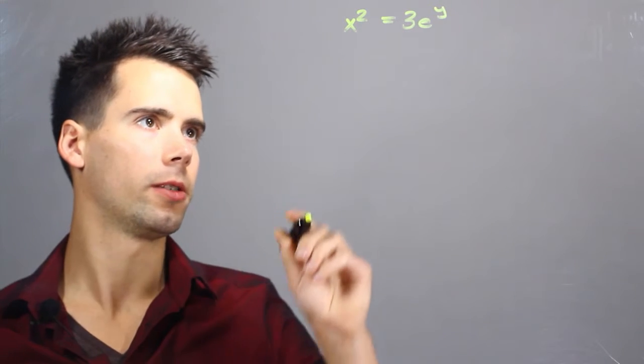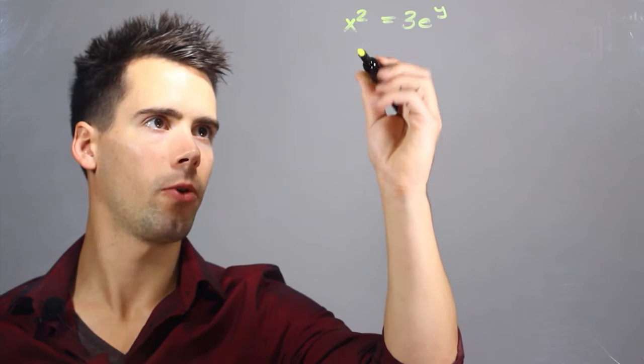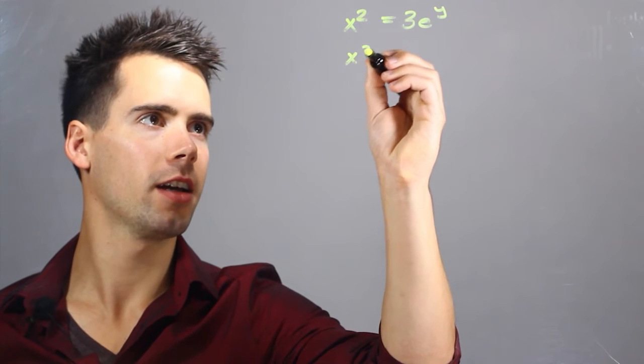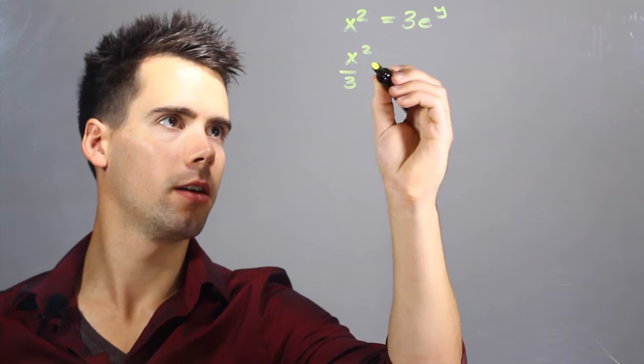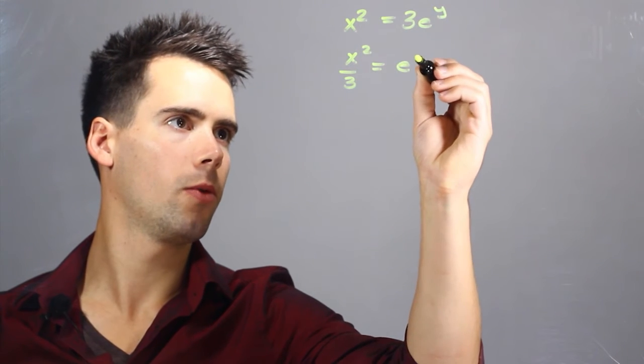So what we can do is first divide both sides by 3 and we find that x squared divided by 3 is equal to e to the y.